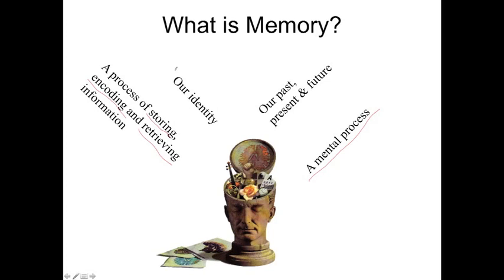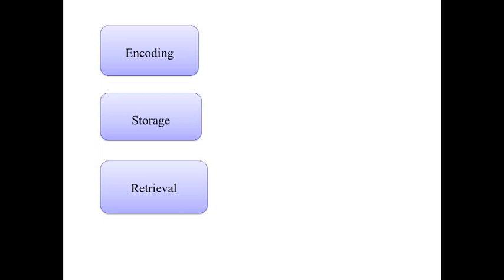What about these two ideas? Memory is our identity — do our memories shape us? The past shapes us, therefore we must remember something about that which has shaped us. What about memory connecting our past, present, and future? We can't plan for the future unless we know what's happened in our past. So that's a perfectly good suggestion. Let's have a look at these three processes of memory.